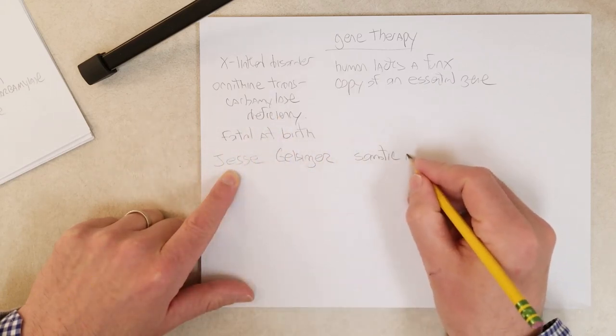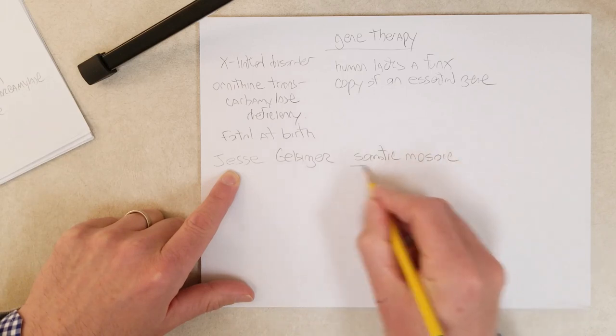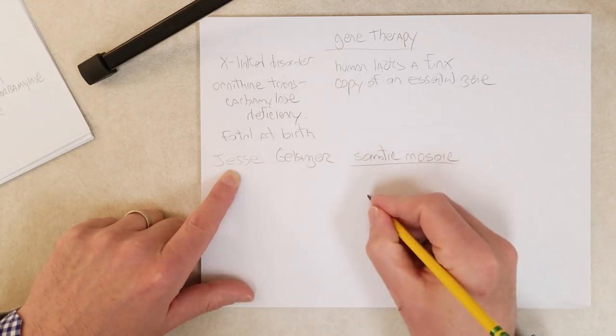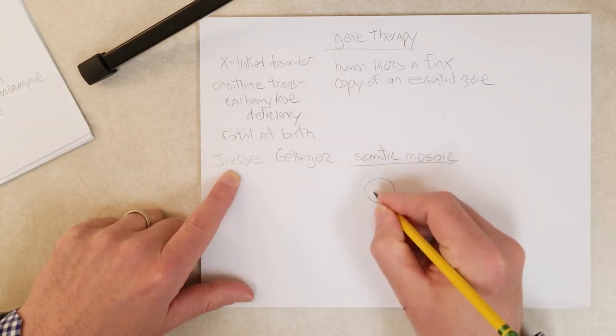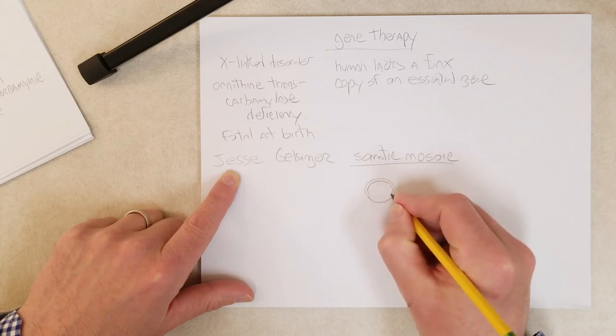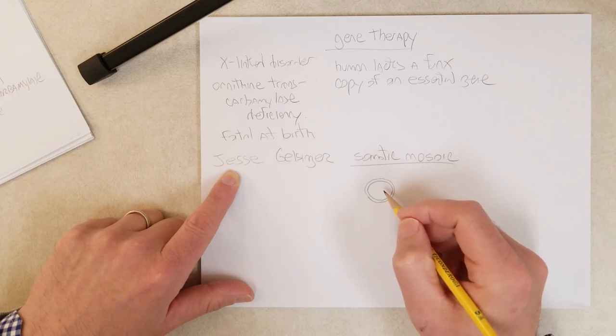Because Jesse was what we would call a somatic mosaic for the mutant gene. And what this means, if you remember from our previous video, from the last video, I think number 2403 it was.